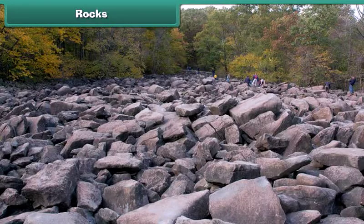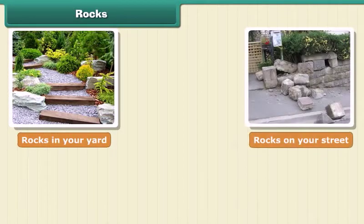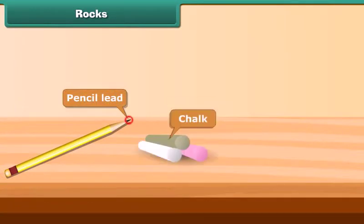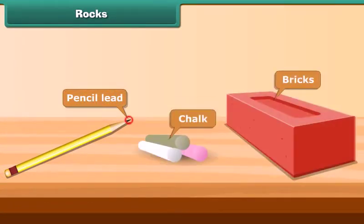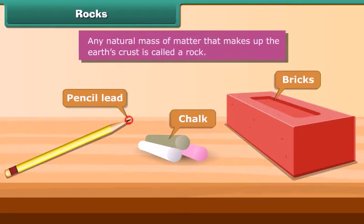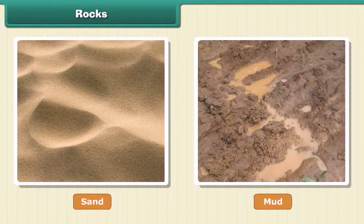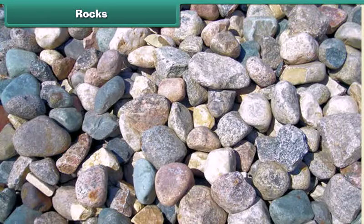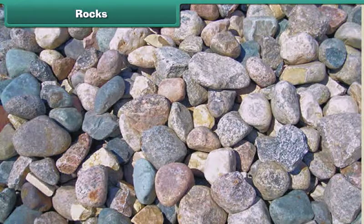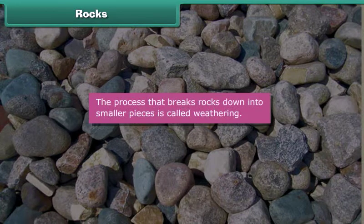Rocks are all around us. You can see rocks in your yard, on your street, on a road — everywhere you look. Pencil lead, chalk, and bricks are all rocks. Any natural mass of matter that makes up the earth's crust is called a rock. Do you know sand and mud are also rocks? Rocks can be of different size and color. The process that breaks rocks down into smaller pieces is called weathering.